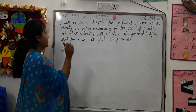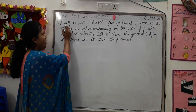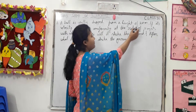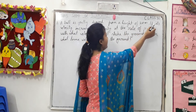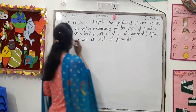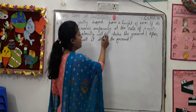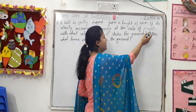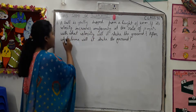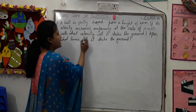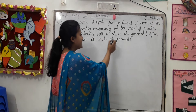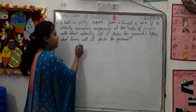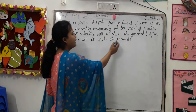Our first question is: A ball is gently dropped from a height of 20 meters. If its velocity increases uniformly at the rate of 10 meters per second squared, with what velocity will it strike the ground? After what time will it strike the ground?